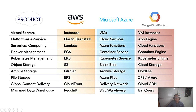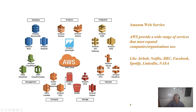Amazon Web Services is number one in the cloud computing market. All big companies — Airbnb, Netflix, BBC, Facebook, Spotify, LinkedIn, and NASA — choose AWS. LinkedIn originated outside Microsoft and was later acquired by Microsoft, yet still uses AWS.